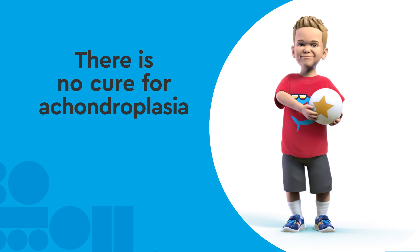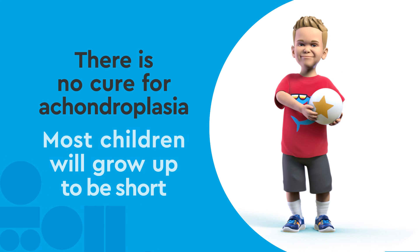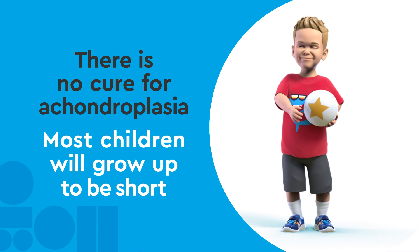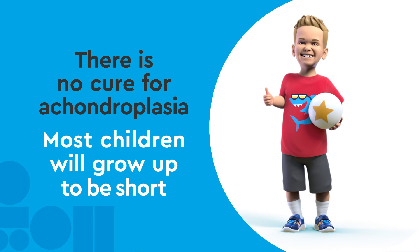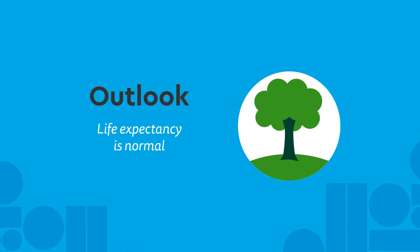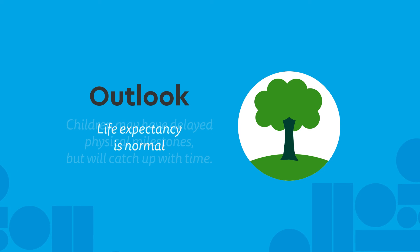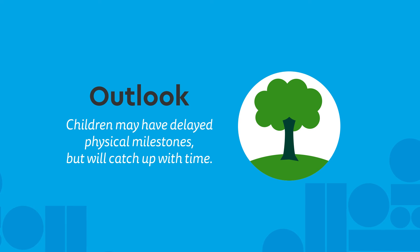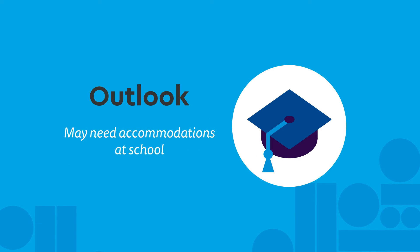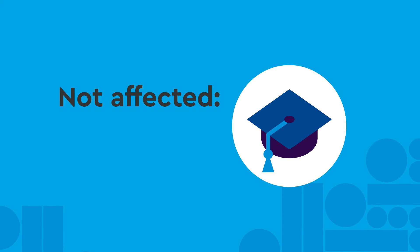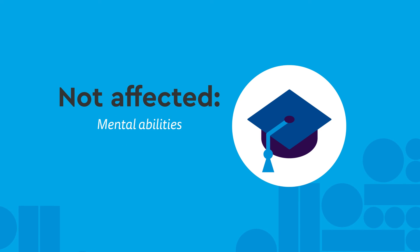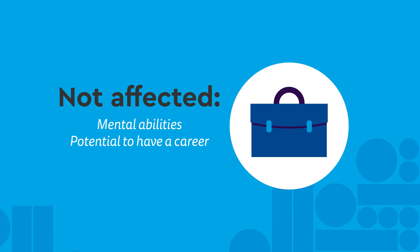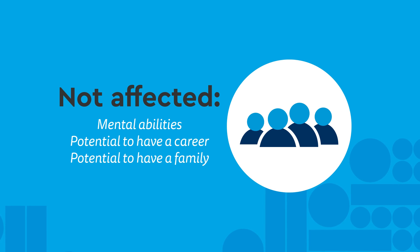There is no cure for achondroplasia, and regardless of treatment, most children will grow up to be shorter than average. Life expectancy is not usually affected by achondroplasia. Children may have delayed physical milestones at first, but they catch up with time. They may need accommodations for their short stature at school, but achondroplasia does not affect their mental abilities or their potential to have a great career or start a family.